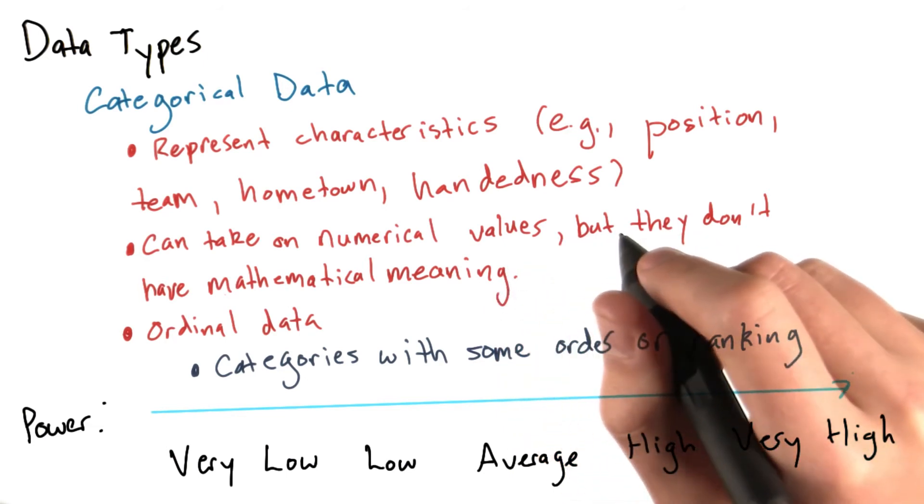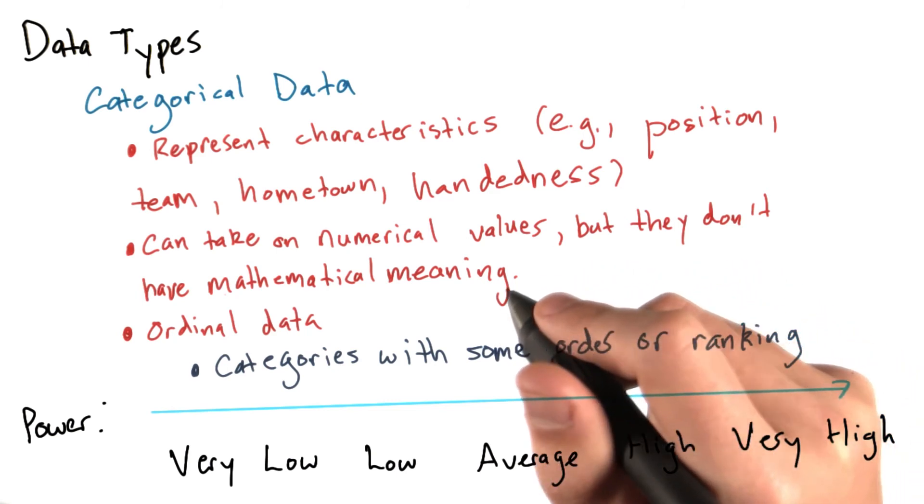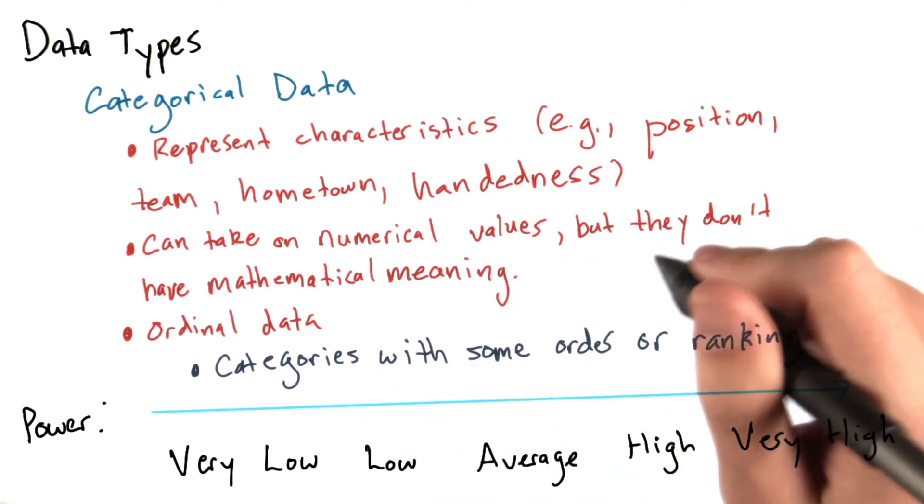For plotting purposes, ordinal data is treated much in the same way as categorical data. But the groups are usually ordered from lowest to highest, so that we can preserve this ordering.